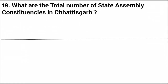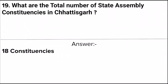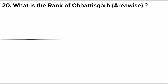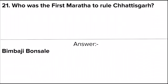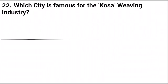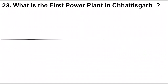Next question: What are the total number of state assembly constituencies in Chhattisgarh? Answer: 18 constituencies. Next question: What is the rank of Chhattisgarh area-wise? Answer: Ninth. Next question: Who was the first Maratha to rule Chhattisgarh? Next question: Which city is famous for the Kosa weaving industry in Chhattisgarh? Answer: Champa.